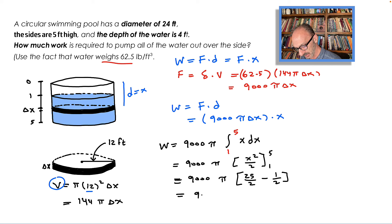That's 9000π times 24 over 2. If you multiply and simplify, we get 108,000π foot-pounds. That is the total work required to pump all of the water out over the side, and that should do it.